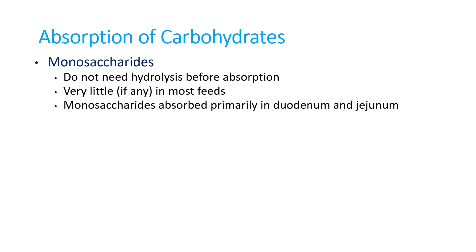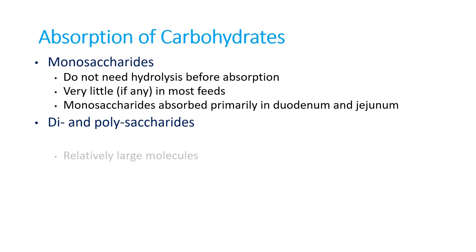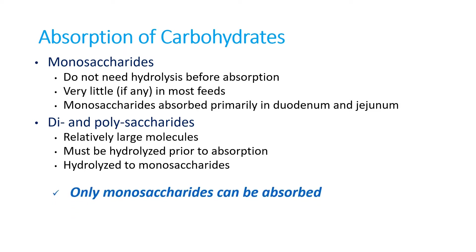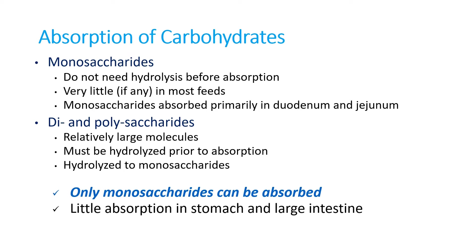Monosaccharides are absorbed primarily in the duodenum and jejunum, but the major amount is absorbed from the jejunum. For disaccharides and polysaccharides, being relatively large molecules, they must be hydrolyzed prior to absorption, as discussed in the digestion section. They are all hydrolyzed into monosaccharides depending on the type of enzymes and site. Only monosaccharides can be absorbed, with very little absorption occurring in the stomach and large intestine. The majority of carbohydrates are absorbed from the small intestine, particularly the jejunum.